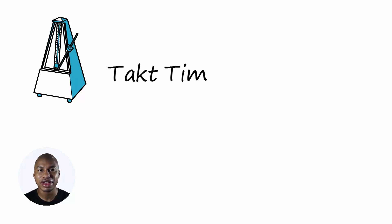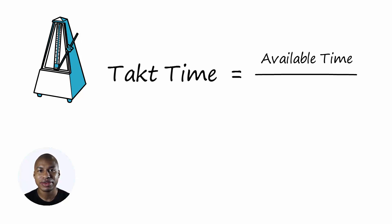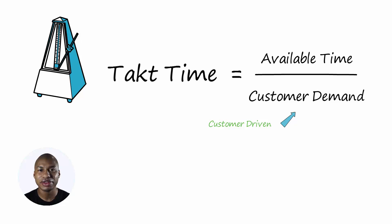The formula to calculate it is: TACT time equals available time over customer demand. Note that there are two variables. The first relates to the customer. The second relates to the plant manager. So, if the demand changes, the manager should change the available time to keep the same TACT time whenever possible.